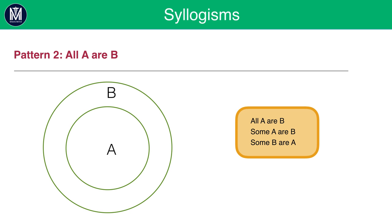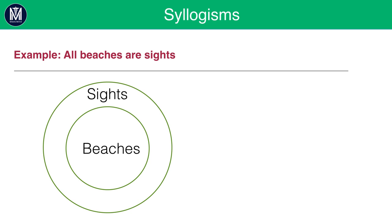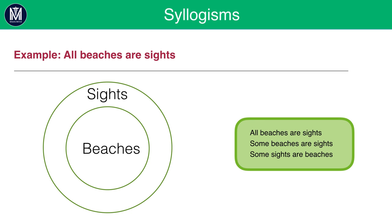For example, 'all beaches are sites.' If all beaches are sites, we know that some beaches must be sites, since all of them are. And some sites will be beaches. Imagine a million sites and 10,000 beaches: all beaches are sites, so some beaches are sites. And of those one million sites, 10,000 are also beaches, so some sites are also beaches.